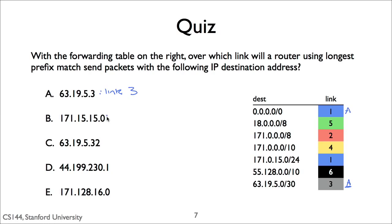The answer for B, 171.15.15.0, is link 4. B matches three entries: it matches the default route, 171.0.0.0/8, and 171.0.0.0/10. It does not match 171.0.15.0/24 because B's second octet is 15, not 0. The third match, 171.0.0.0/10, is the longest prefix at 10 bits, so the router sends the packet along link 4.